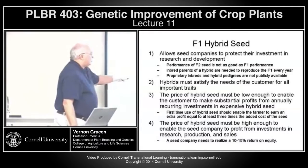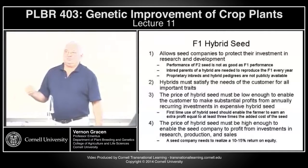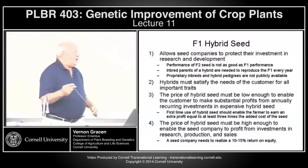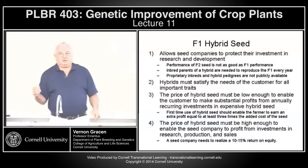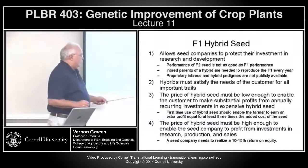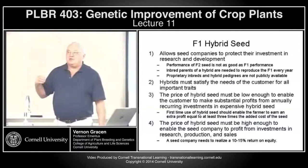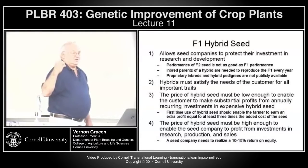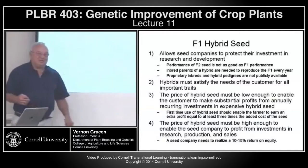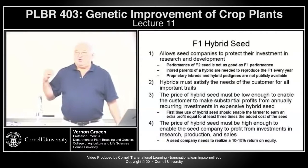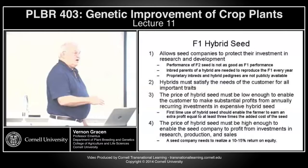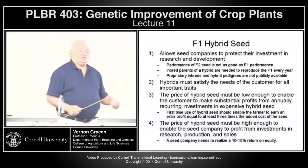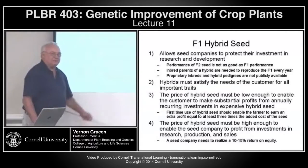On the other side, the price of hybrid seed must be high enough to enable the company to make profits. Before the era of biotechnology, seed company profit margins were in the range of 10% to 15% return on equity — pretty low. The axiom in the seed business was that the margin per bag of seed is low, so if you're going to be successful, you've got to sell large volumes. The more successful companies were those that sold larger and larger volumes of seed.